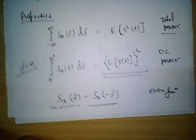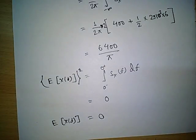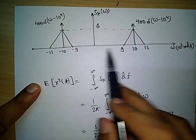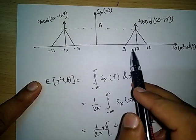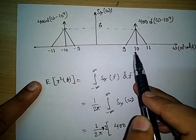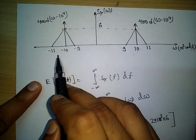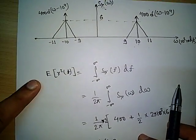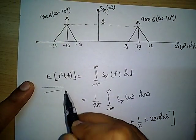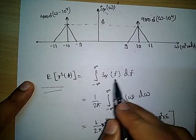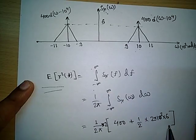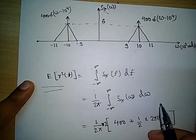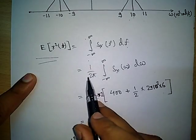Since we were given the function only for positive frequencies, and by the even-function property S_x(f) = S_x(−f), the same shape appears on the negative side. I have drawn the entire S_x function, i.e., the power spectral density, for all frequencies. To find the total power E[x²(t)], we integrate the entire function over the frequency domain from minus infinity to plus infinity: E[x²(t)] = integral of S_x(f) df, or in omega terms, (1/2π) times the integral of S_x(ω) dω.